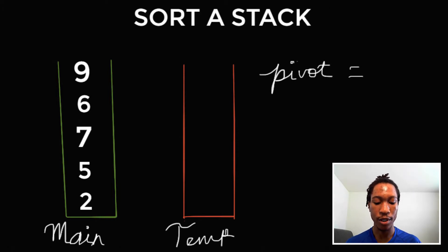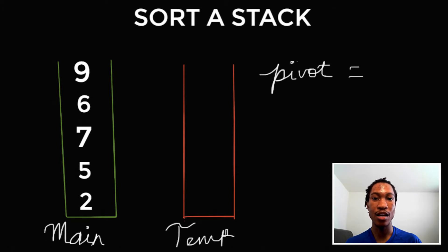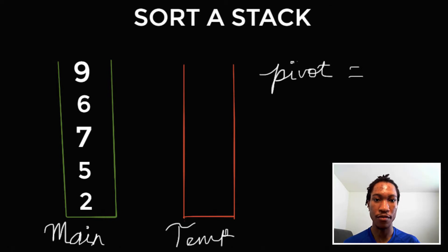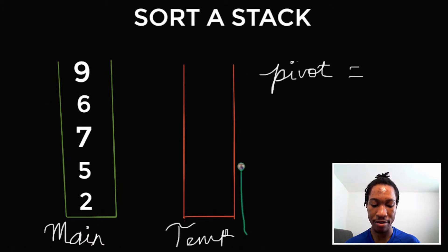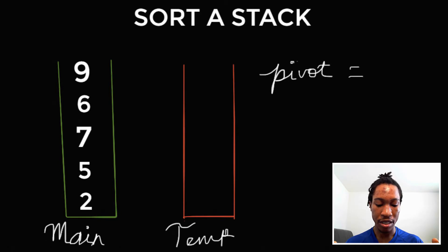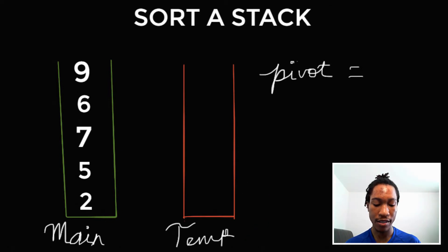So how do we do this? To solve this question, since they only want us to use stacks, we're going to use another stack that's going to hold our temporary variables, and then we're going to maintain the state of the temporary stack by sorting all the elements that we push into it. We're going to iterate through the main stack, pick a pivot value, and then order the elements in the temporary stack with respect to our pivot value.